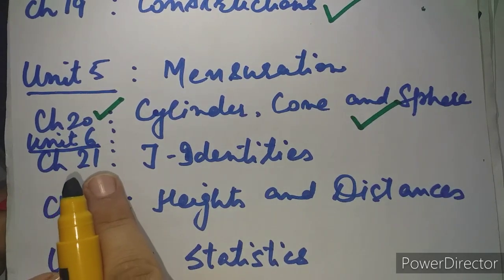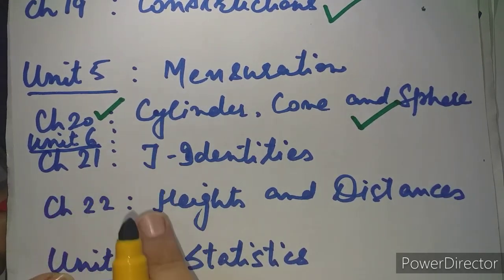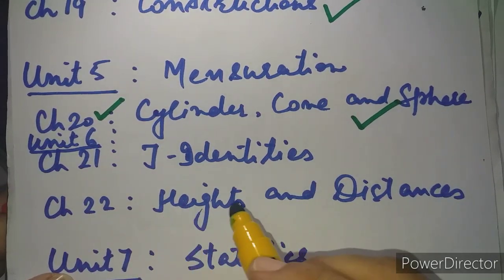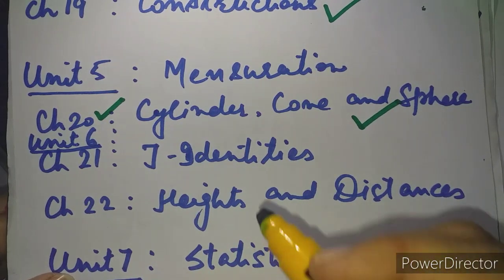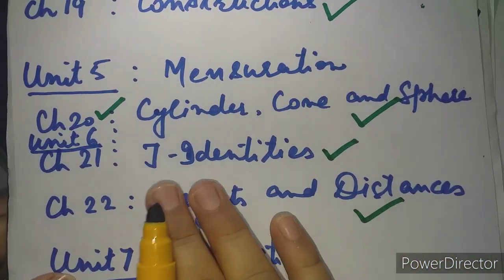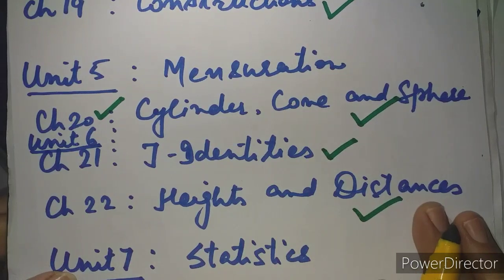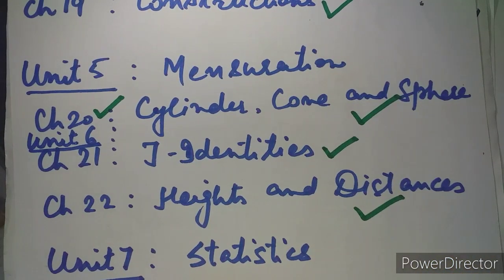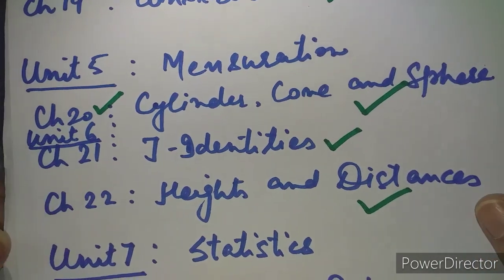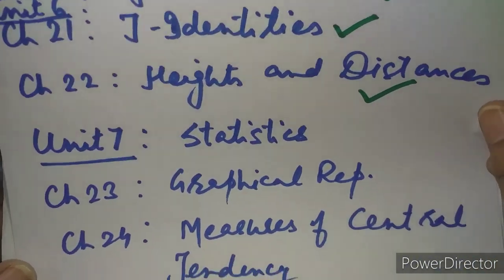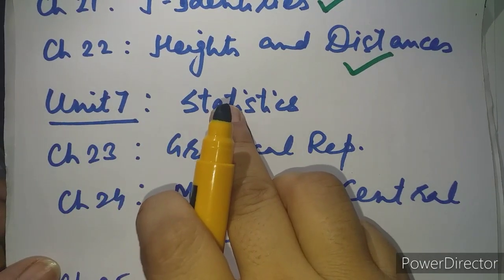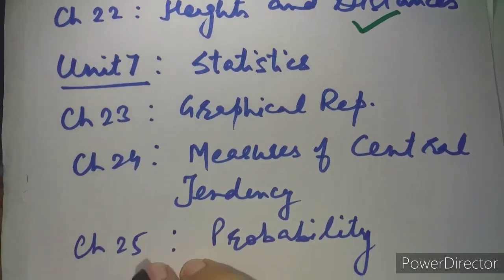Unit Number 6 is Trigonometry, containing two chapters: Chapter 21, Trigonometric Identities, and Chapter 22, Heights and Distances. Without any change, both chapters — Trigonometric Identities as well as Heights and Distances, very interesting and scoring chapters — have been included without a single cut.